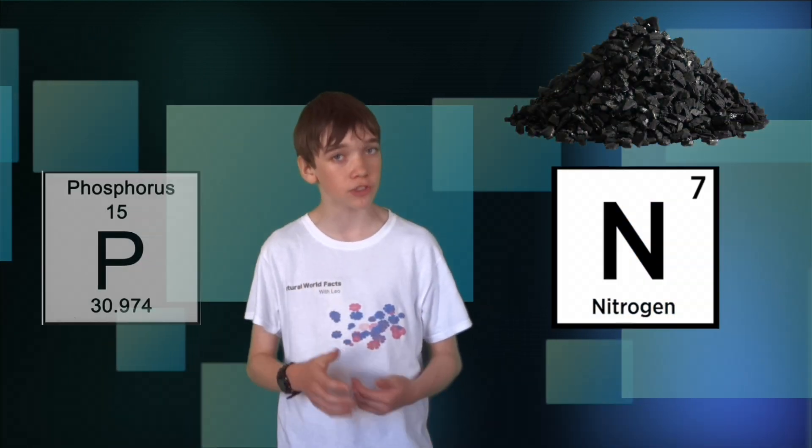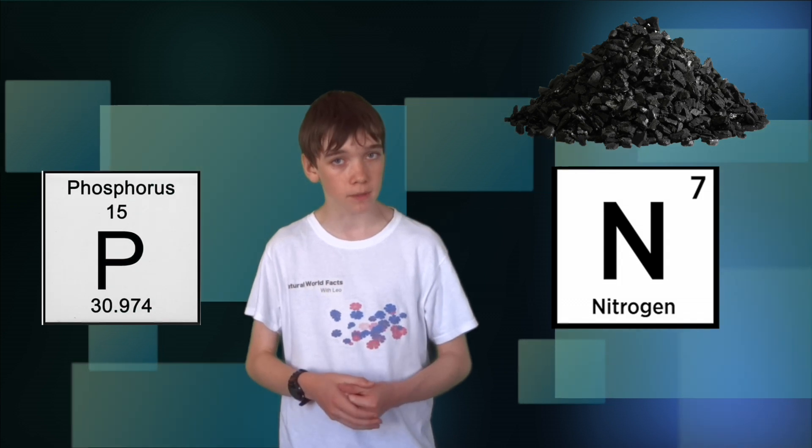Ecosystems also go through a number of processes; they have energy flows and also cycle materials. The energy is first consumed by the plants through photosynthesis and is converted to heat energy. The animals in an ecosystem also obtain elements such as carbon, nitrogen or phosphorus from their environment.